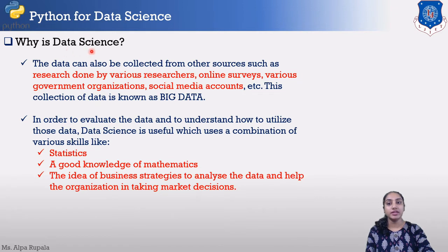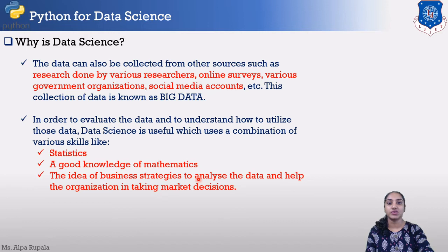How can you do data science? A data scientist must have knowledge of statistics, a good knowledge of mathematics, and an understanding of business strategies to analyze data and help organizations make marketing decisions. These are the combination of various skills a person must have to be a data analyst.